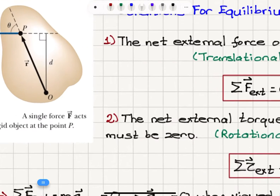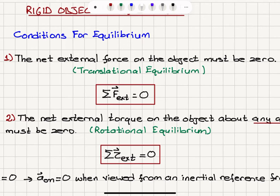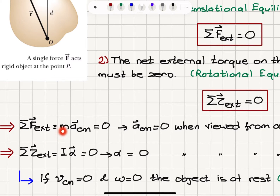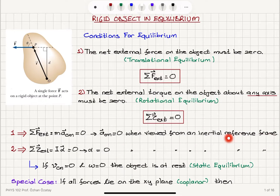What are the conditions for equilibrium? The first condition is that the net external force on the object must be zero. This is called translational equilibrium. We can write this as the sum over all external forces acting on the object equals zero. From Newton's second law, the net force acting on an object is mass times the acceleration of the center of mass. If this is zero, that implies the acceleration is zero, when viewed from an inertial reference frame — a non-accelerating reference frame.